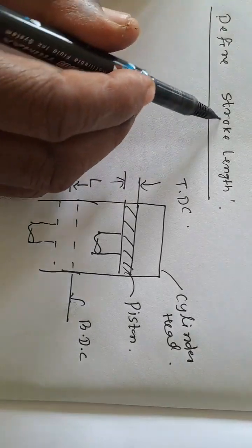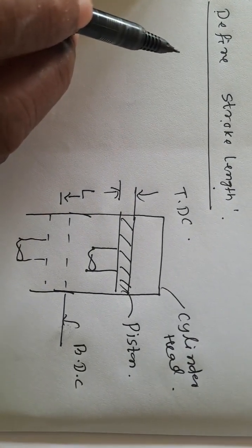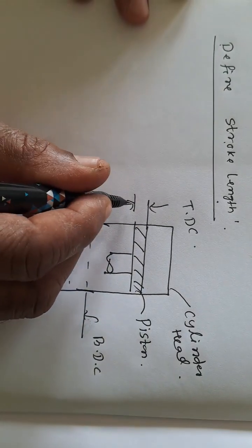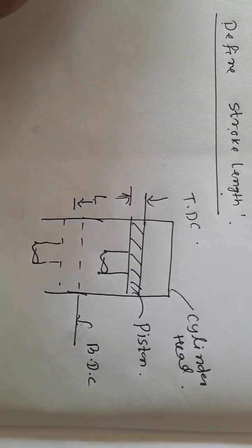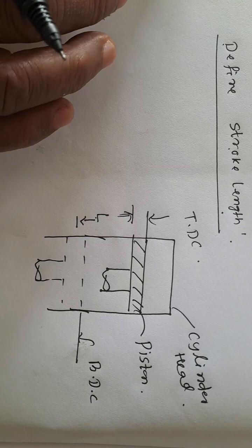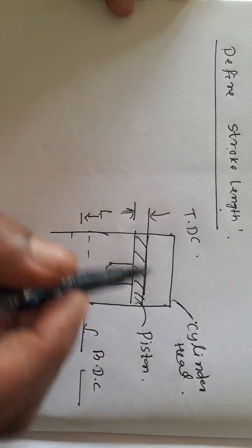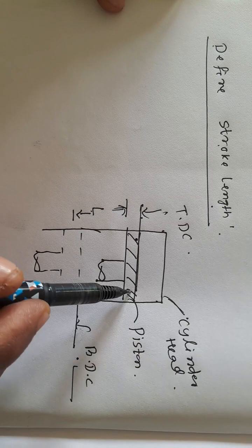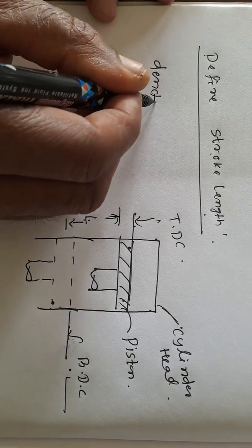Define stroke length. Generally, it is the distance travelled by the piston from one of its dead center positions to another dead center position. This is represented by L. Stroke length means the maximum distance travelled by the piston from top dead center (TDC) to bottom dead center (BDC). It is generally denoted by L.